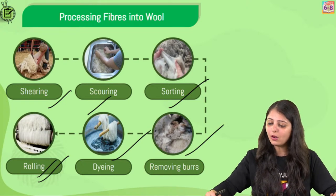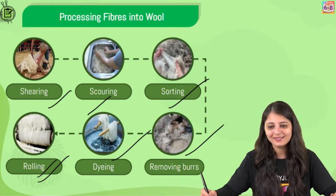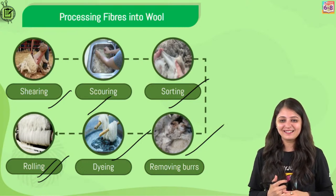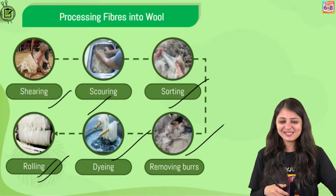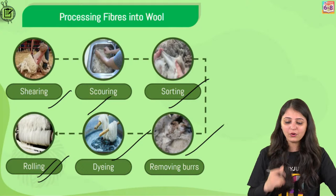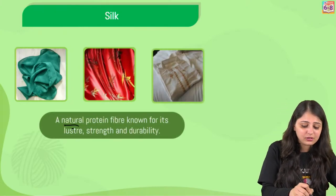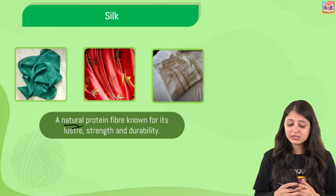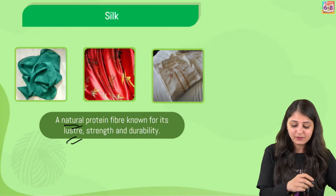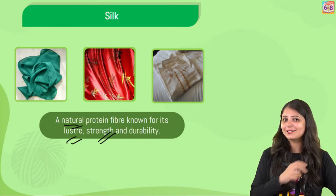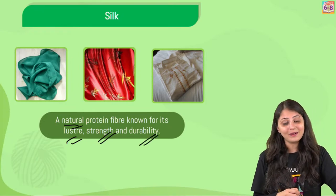Loads of thumbs up if you remember all these concepts about wool. The next topic is silk. Silk is a natural fiber and it's very famous for its shiny appearance - lustre means the shiny appearance. It has strength, so it's actually the strongest natural fiber. In case they twist the question and ask 'which is the strongest natural fiber,' now you know it is silk. It also has durability, so it lasts longer as well.